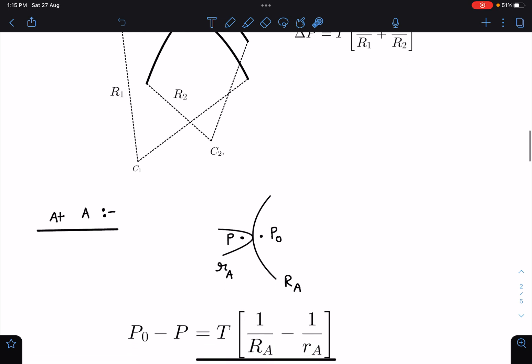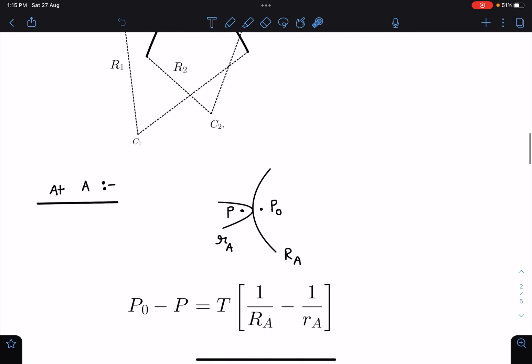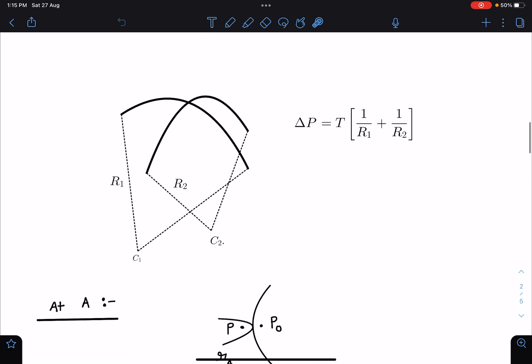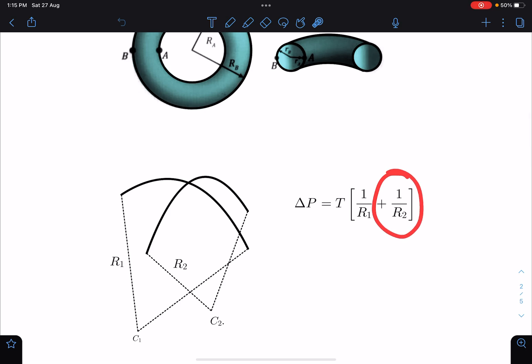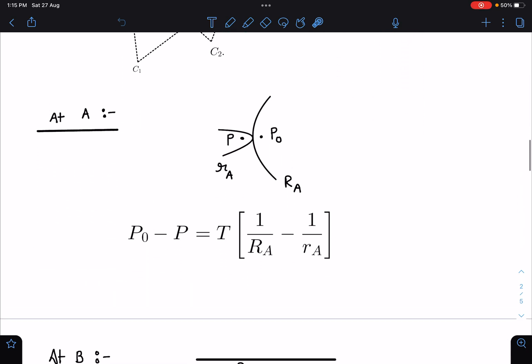P_0 minus P is the excess pressure. P_0 is more than P, so this will be dominating. I am writing it as T(1/R_A). This will be in opposite direction, so I have to write it as minus 1/r_A. Instead of plus 1/R_1 plus 1/R_2, this radius of curvature is negative. Had it been in this direction, same side, then it would be with plus sign.